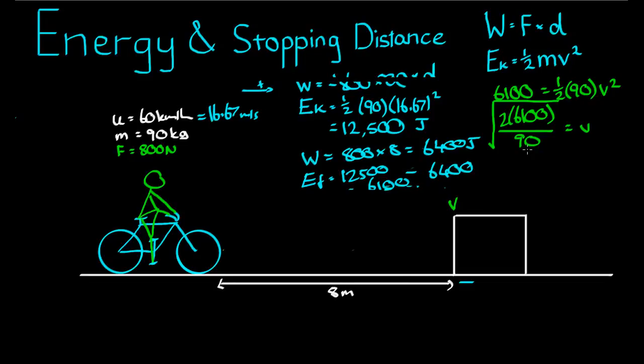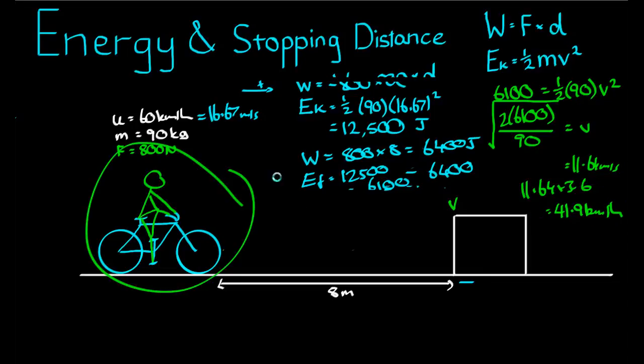Which comes to 11.64 meters per second. Multiplying that by 11.64 times 3.6 shows us that that is 41.9 kilometers per hour, which is very close to the initial velocity in the first part of our question. So that shows us,